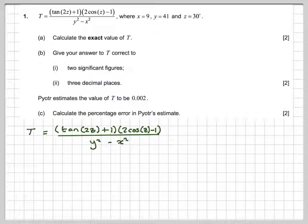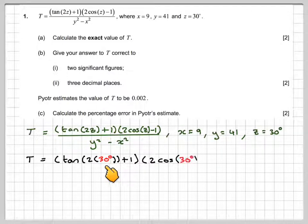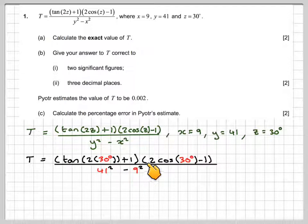We've got to be a little bit careful how we put this into our calculator. So if we go to our calculator, we've got T is tan 2 times 30, and just to put 2 times 30 is 60, plus 1 times 2 cos z minus 1 over 41 squared minus 9 squared.